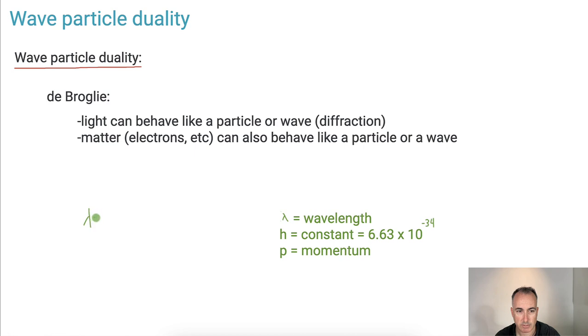It goes lambda equals h over p. This is from your data booklet. And what's lambda? Lambda is the wavelength, so that's in meters. h is actually called Planck's constant. It's 6.63 times 10 to the minus 34 joules seconds. And then we've got momentum. Momentum, p equals mv. So that must mean mass, that's kilograms, and v is in meters per second.